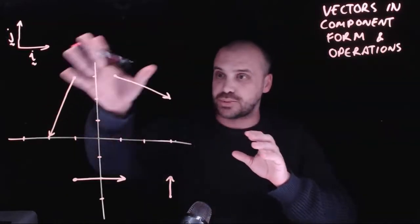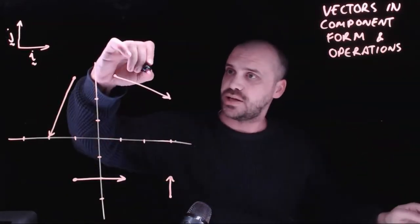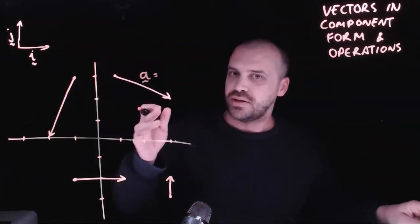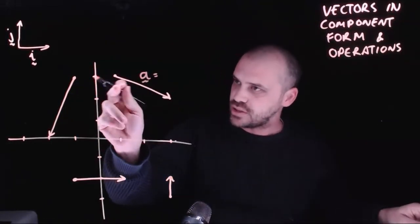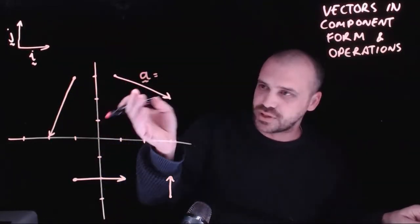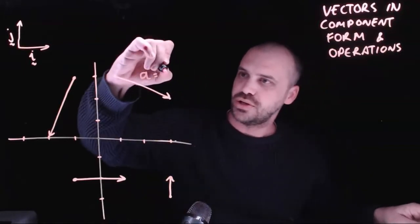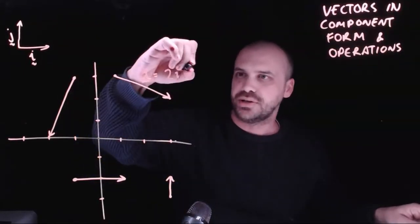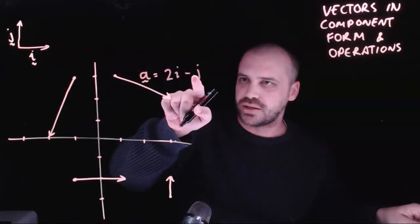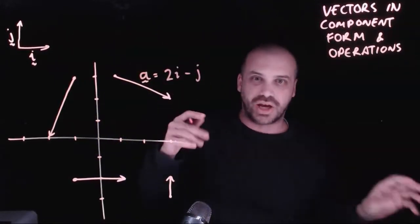So very quickly, I can express these four vectors. Let's call this vector a. This vector can be expressed as two across. We're starting from here and we're moving to here. So it's two across, two in the i direction, and then one down. So minus j, minus one in the j direction.